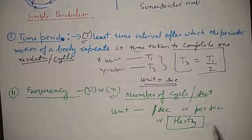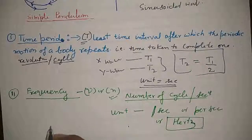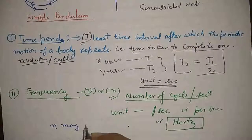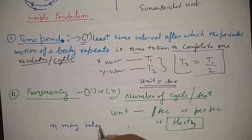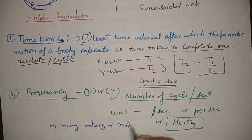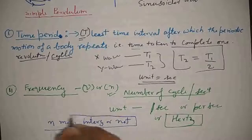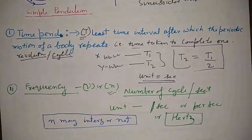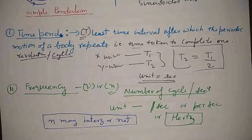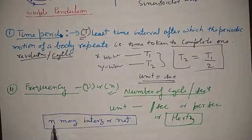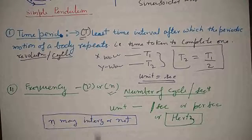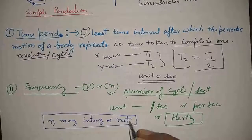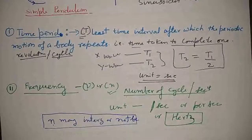This frequency may be integer or not. Sometimes in one second may be complete number of oscillations, or may be fractional also. So nu may be integer, may not be.